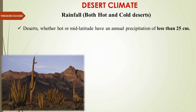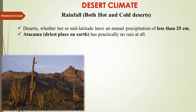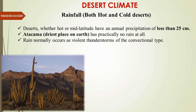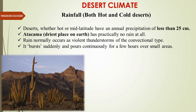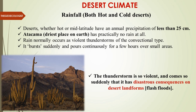In terms of rainfall, both hot and mid-latitude deserts have annual precipitation less than 25 centimeters. The Atacama is the driest place on Earth with practically no rain at all. Rain normally occurs in violent thunderstorms due to convection and intense low pressure, causing sudden bursts — and this leads to flash floods with disastrous consequences for desert landforms.